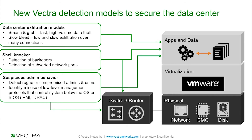Lastly, where we ultimately keep score is around data exfiltration. We always want to identify and stop attacks before they get to this phase, but we have specific new detection models designed for the data center. We're looking for different types of exfiltration. One is called smash and grab — the standard high-volume approach where the attacker grabs all the data they can and pumps it out quickly. But we also have models looking for what we call slow bleed — the much more subtle, low-and-slow approaches where the attacker wants to stay under the radar. We have both of those approaches built into how we look into the data center.